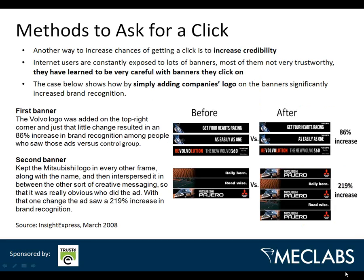Here's an interesting test case published in Marketing Sherpa, done by Insight Express in March 2008. The goal was to increase brand recognition for both Volvo and Mitsubishi using rotating banners. Volvo simply added their logo in the top right corner of all three panes and got an 86% increase in brand recognition. Mitsubishi added a Mitsubishi Pajero slide in between the other two storyboard slides and had a 219% increase. Just think about how inexpensive it was to change their banner that little — just easy tweaks can really increase banner effectiveness.